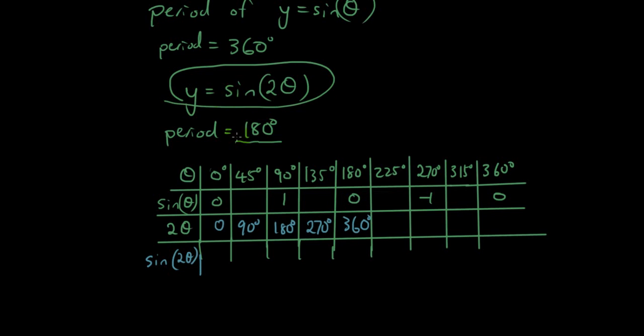Because that's the new function, y equals sine bracket 2 theta. So we then put that as the input to the sine function. So sine 0 is 0, sine 90 is 1, sine 180 is 0, sine 270 is negative 1, sine 360 is 0.